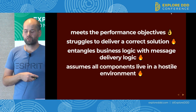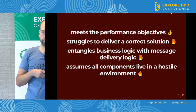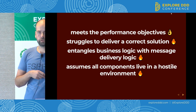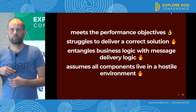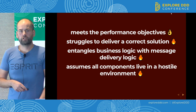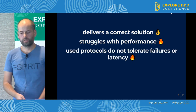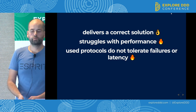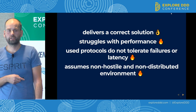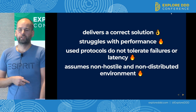They have very many small microservices, each with its own message deduplication code entangled with business logic code — and that's not going to work correctly. Why did they design it that way with tiny microservices? They assumed that components live in a hostile environment — that each tiny microservice would live in a separate data center and needs to deal with all communication problems on its own. While the blue team delivered the correct solution but struggled with performance because they used protocols like two-phase commit that don't tolerate failures or latency.